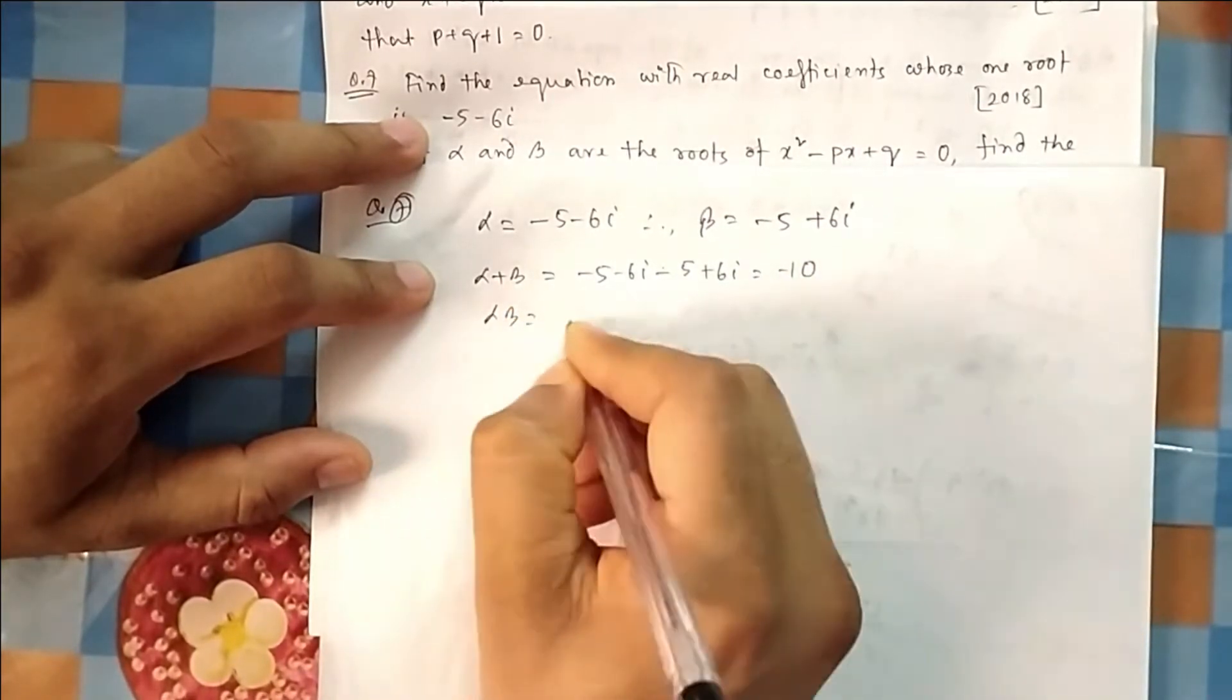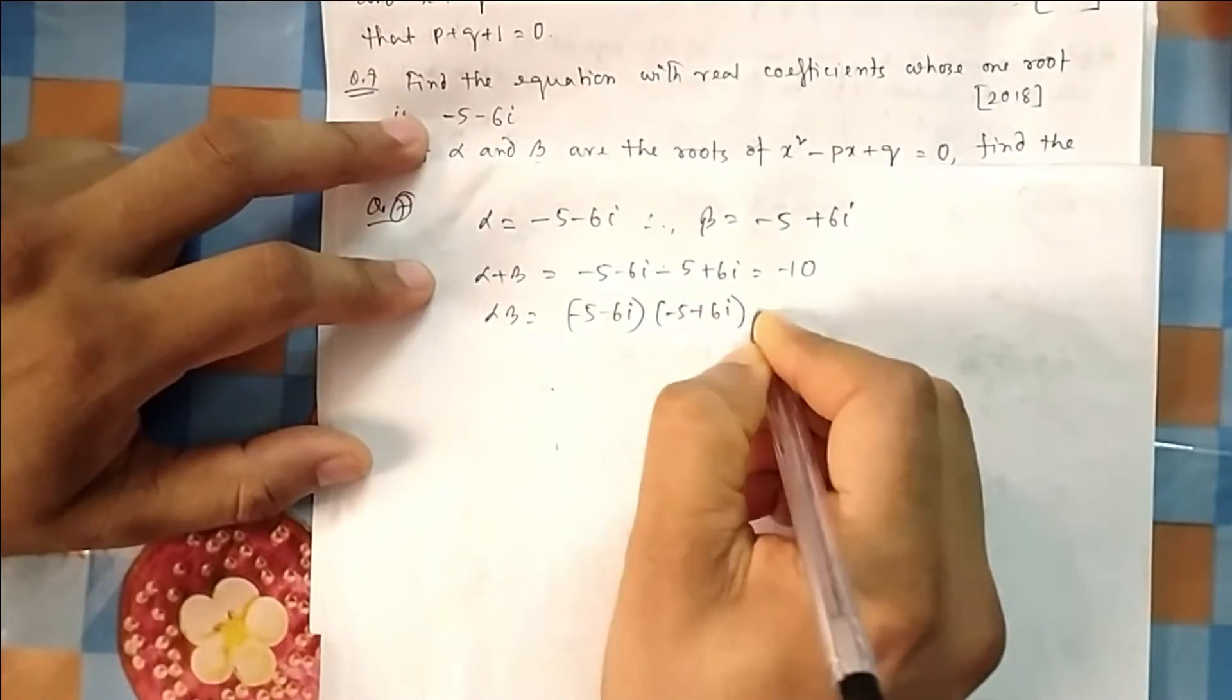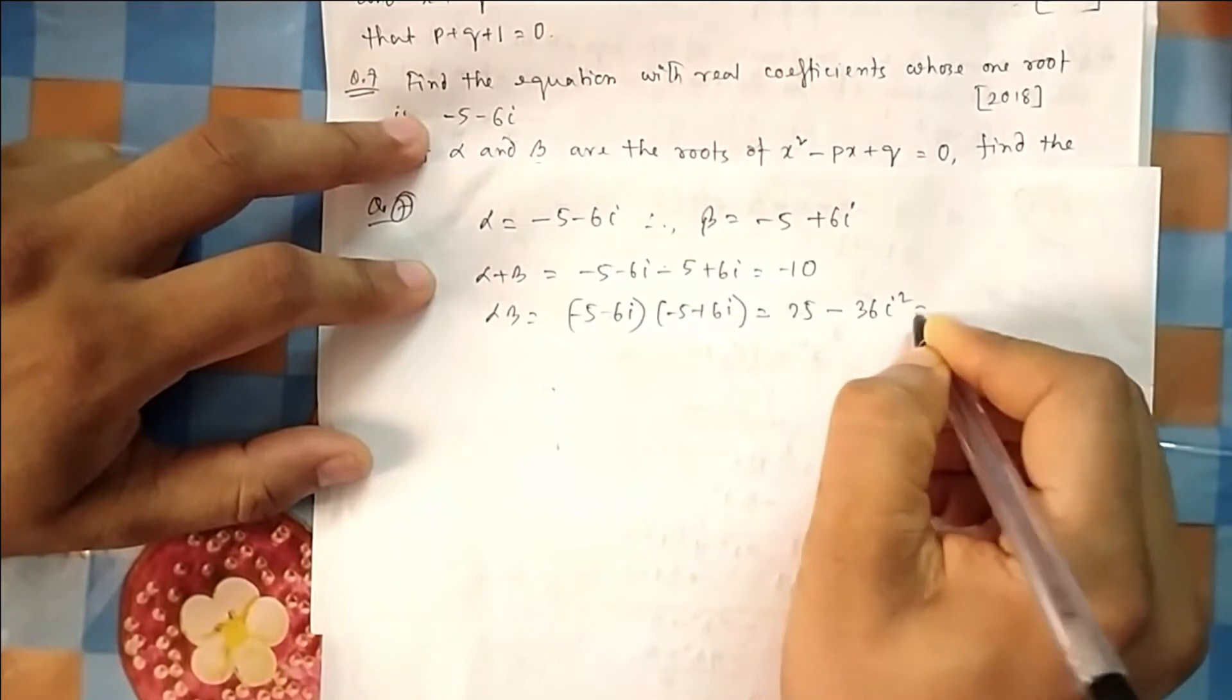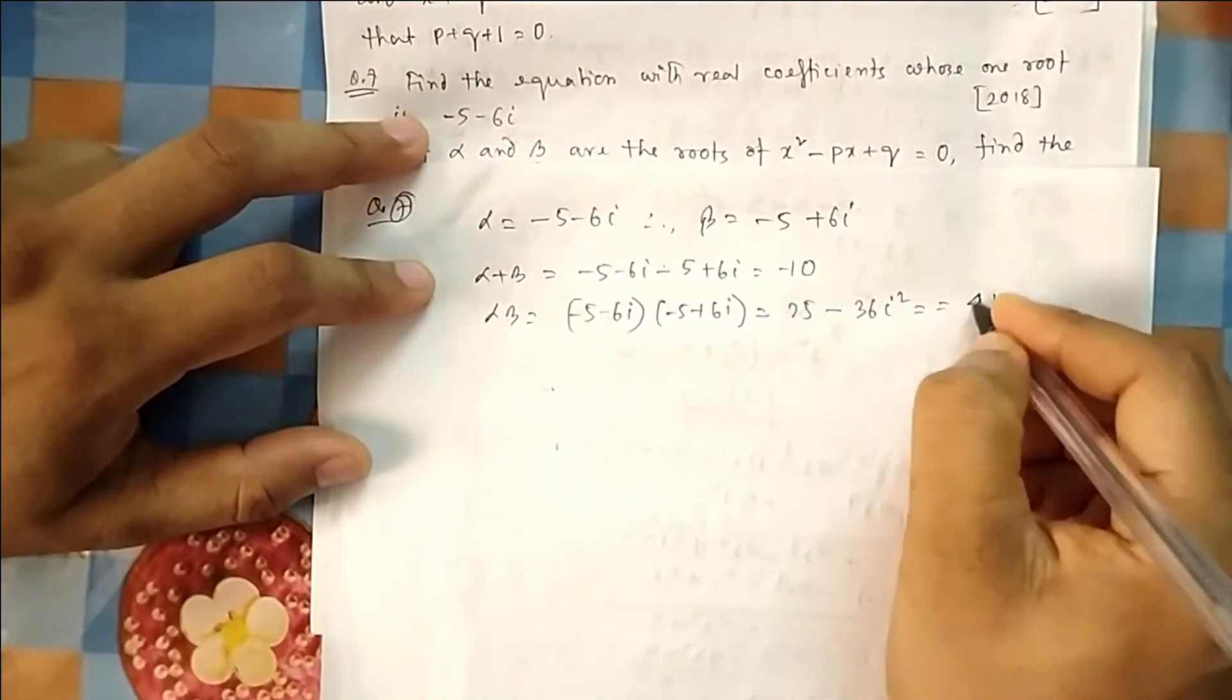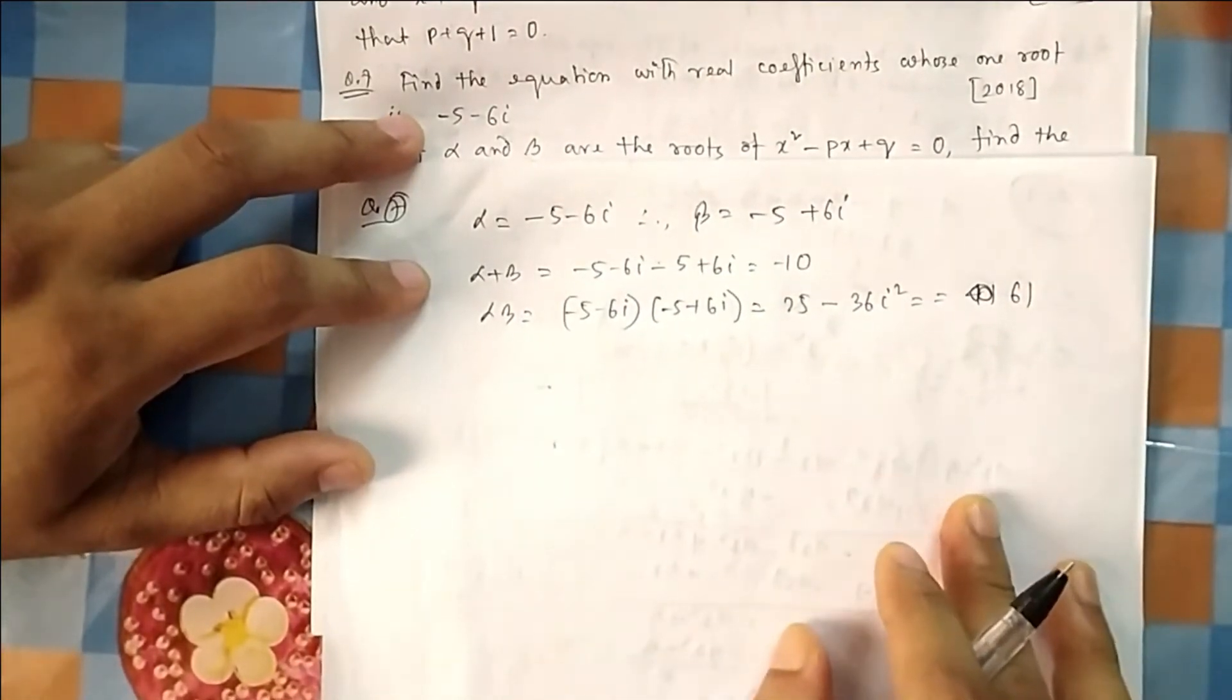If you take product of these two roots, then (a+b)(a-b) will do it, and then it will be a² - b²i², but i² is -1, so it will get, you will get 51... 61. So you will get 61.